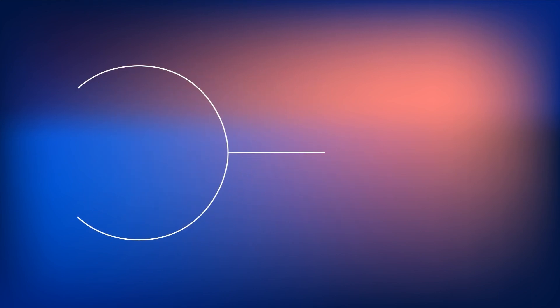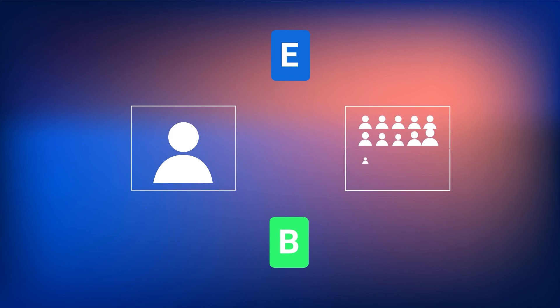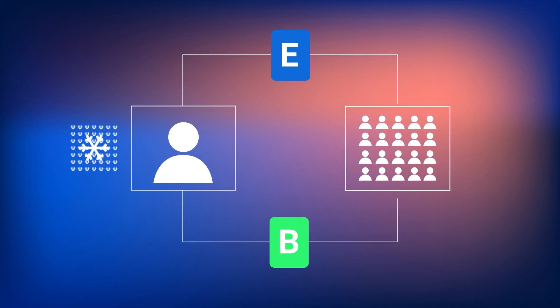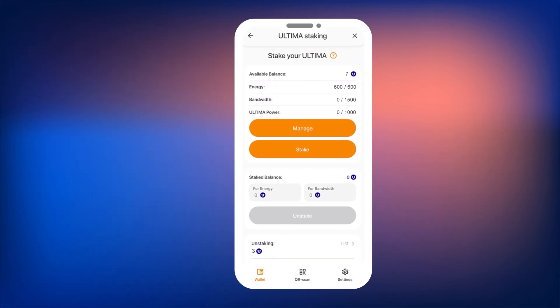Now let's move on to resource delegation. Delegation on the Ultima blockchain allows you to transfer your resources, such as energy and bandwidth, to other users. By freezing your Ultima coins, you receive these resources and can delegate them so others can perform transactions more cheaply or even for free. You choose the period for which you want to delegate the resources, and after that period ends, you can reclaim them. This is a convenient way to help other network participants and optimize the use of your resources.